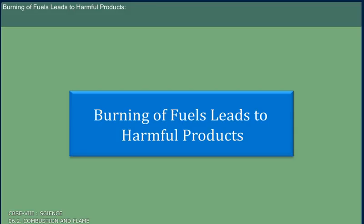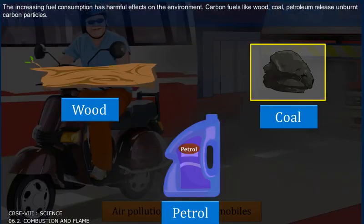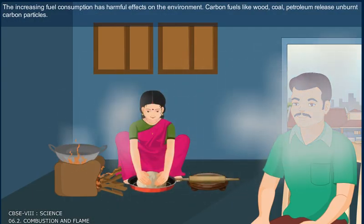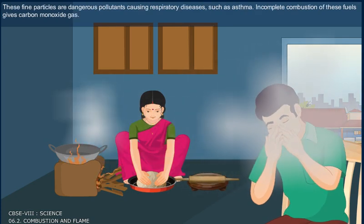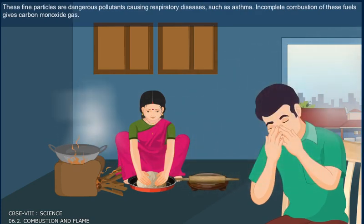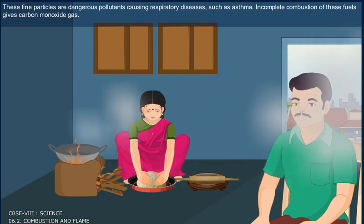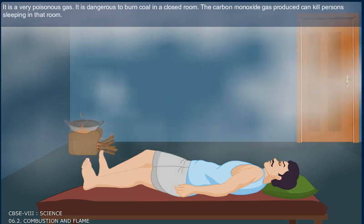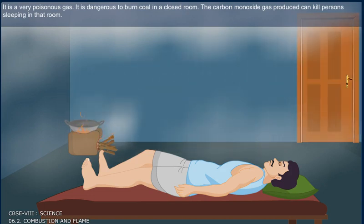Burning of fuels leads to harmful products. The increasing fuel consumption has harmful effects on the environment. Carbon fuels like wood, coal and petroleum release unburned carbon particles. These fine particles are dangerous pollutants causing respiratory diseases such as asthma. Incomplete combustion of these fuels gives carbon monoxide gas, which is a very poisonous gas. It is dangerous to burn coal in a closed room, as the carbon monoxide gas produced can kill persons sleeping in that room.